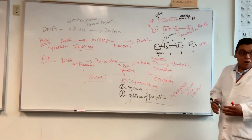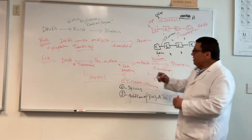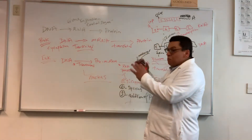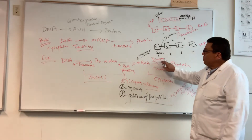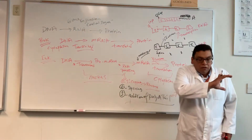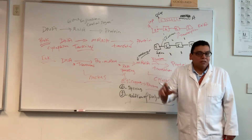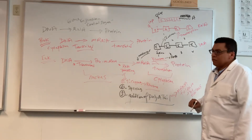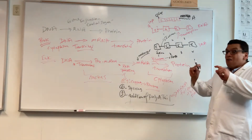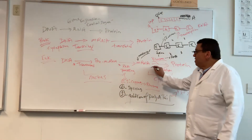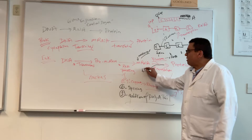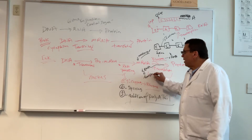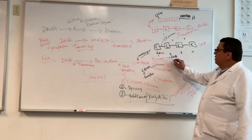The ribosome is the translator of the message. The mRNA — messenger RNA — carries the message, for example, 'make catalase.' The ribosome reads that message. The ribosome is made up of a special RNA called ribosomal RNA. But there's another RNA involved: transfer RNA, or tRNA. The T stands for transfer — it's transferring something.